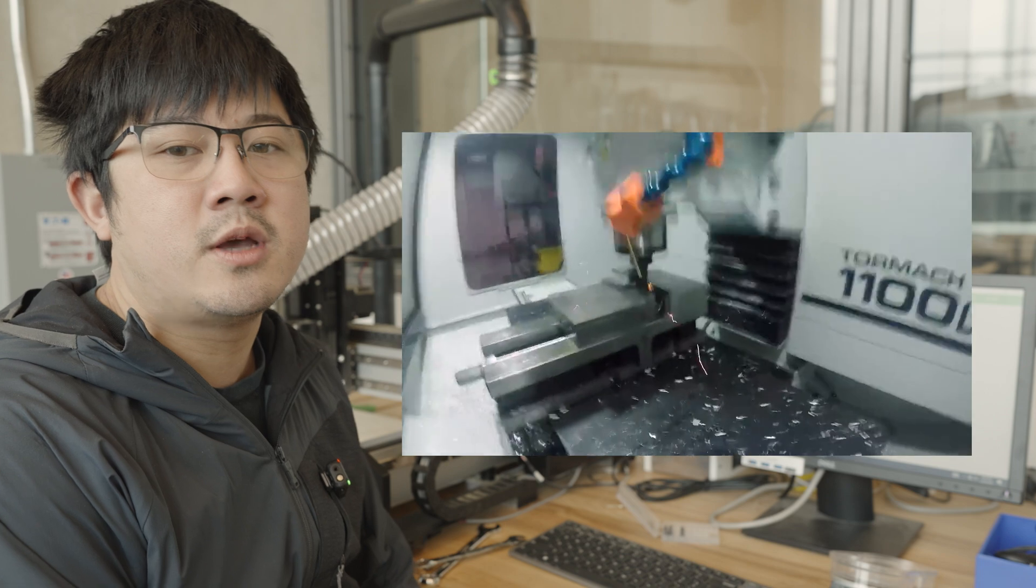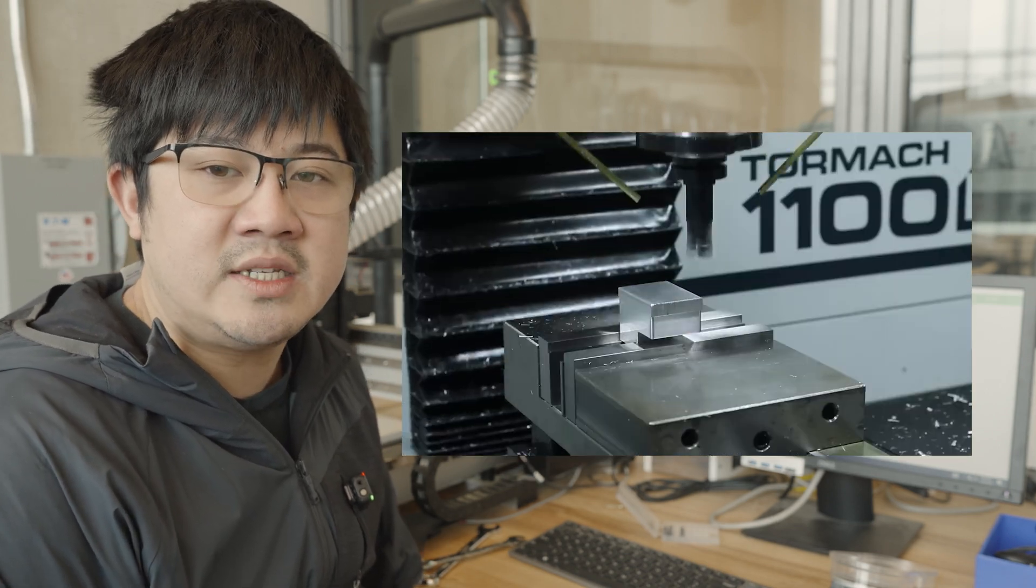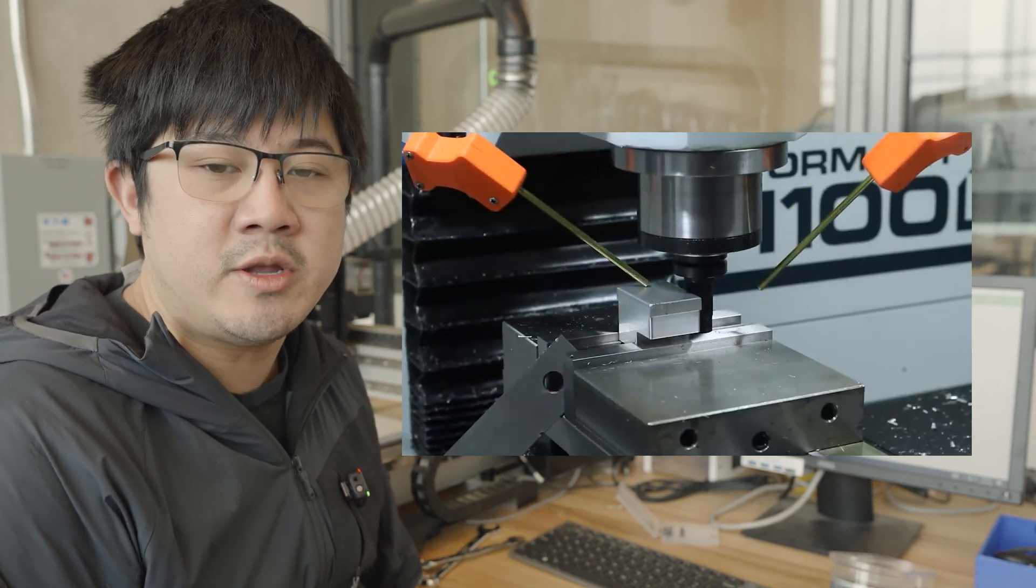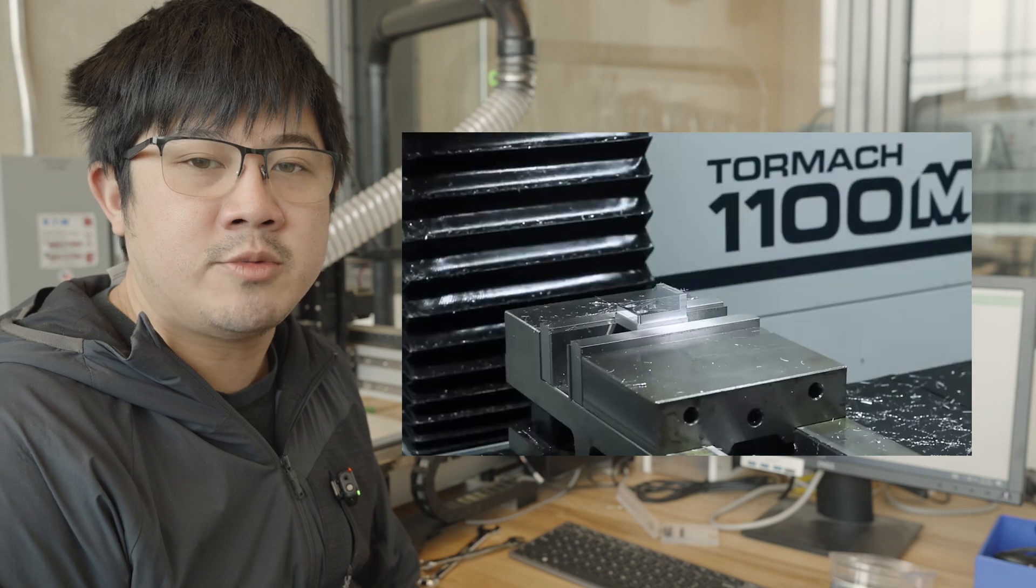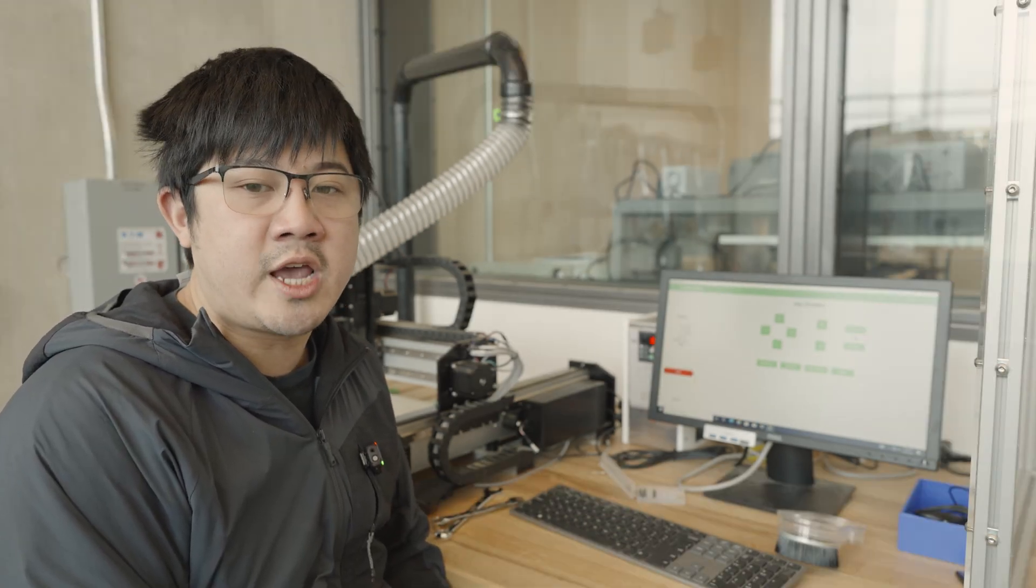Okay, once we have our tool in the machine and torqued down, we're going to be able to set our X, Y, and Z zero. So CNC machines operate on the Cartesian coordinate system, so making sure X, Y, and Z zero is correct is super important, especially the Z zero. Because if the Z zero is wrong, the machine could crash the spindle into your workpiece, which would cause damage to the machine, as well as scrapping your part.